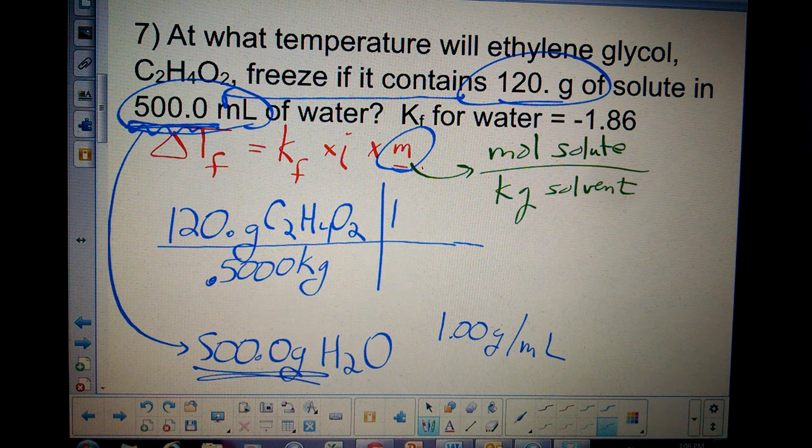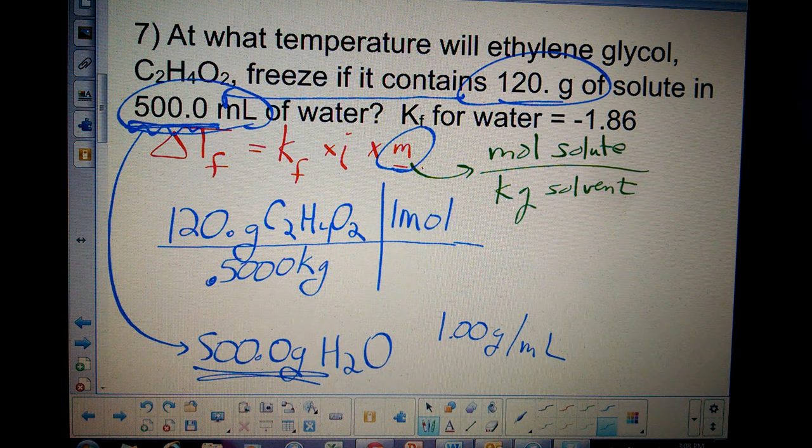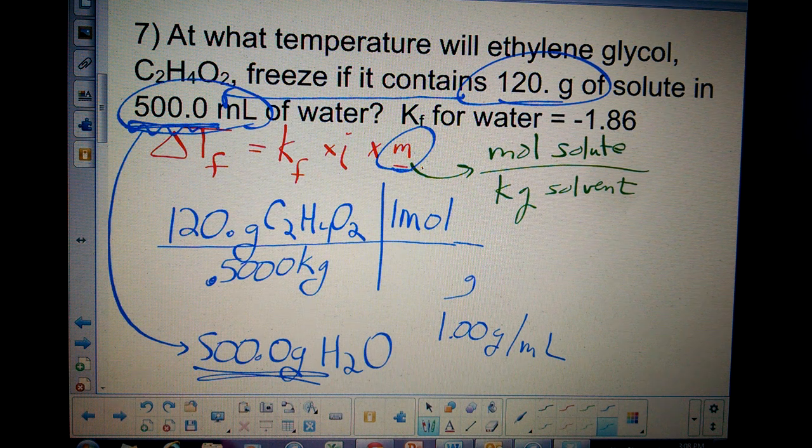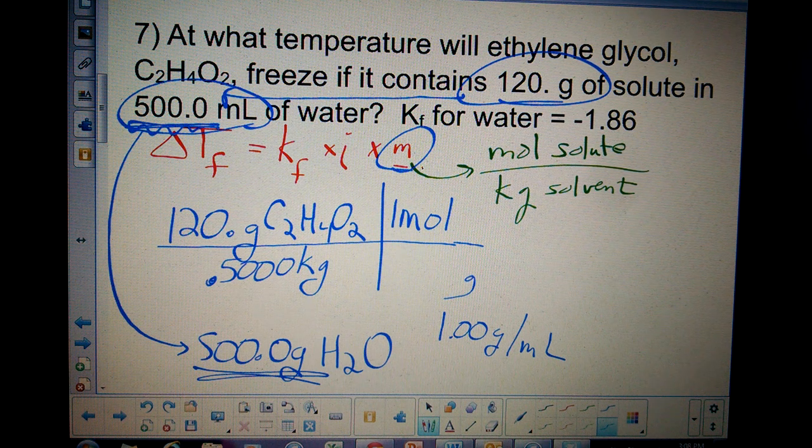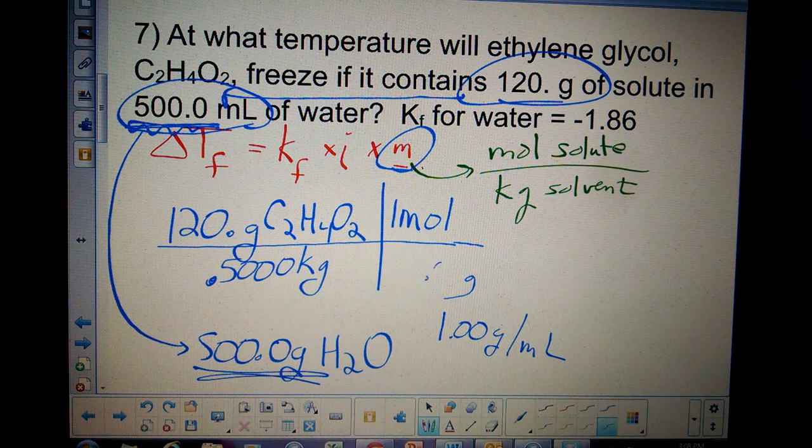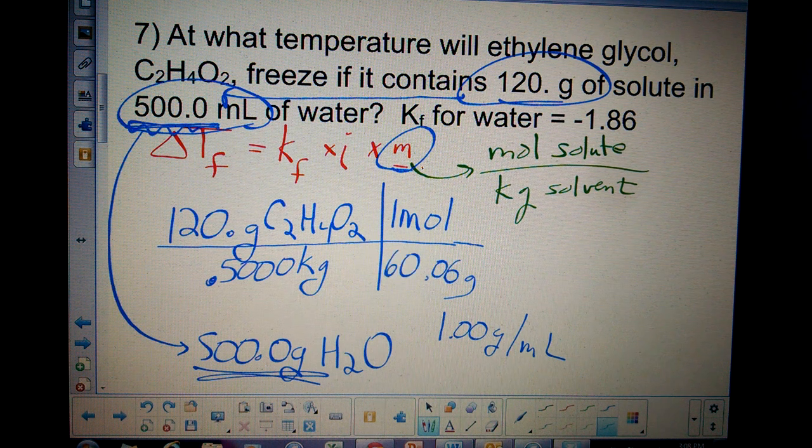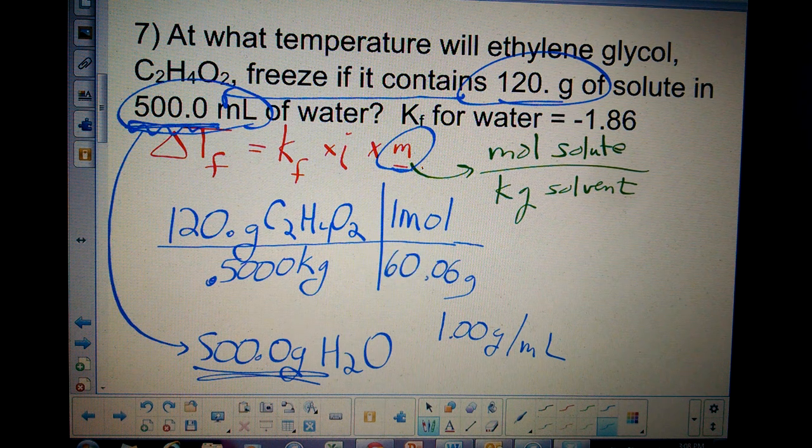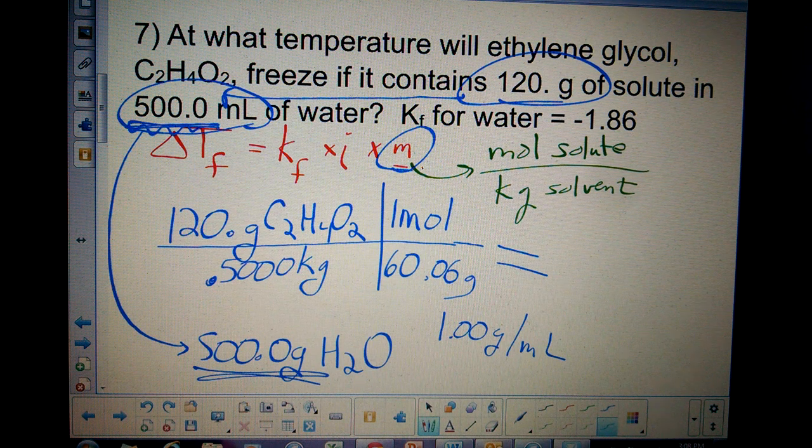I'm going to convert to moles. In one mole of ethylene glycol, I need a molar mass. Let's see. It's 32 plus 24.02, 57.06.